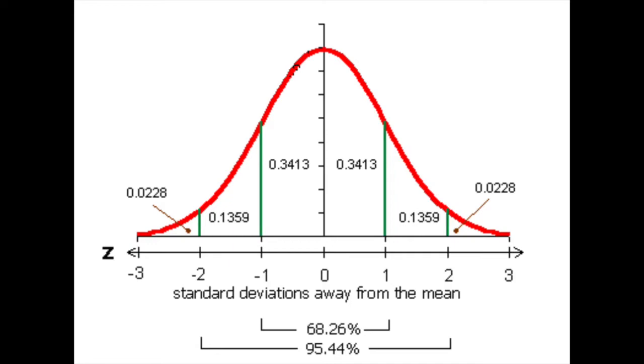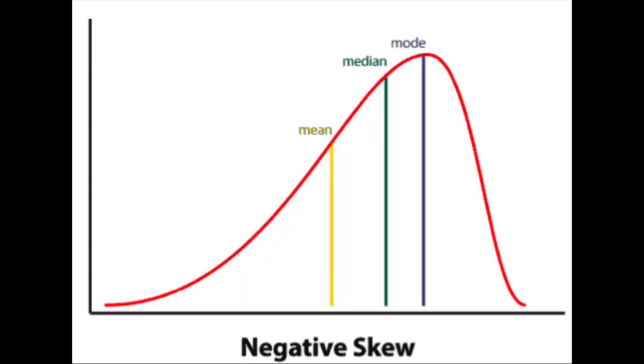We have the bell curve or the normal curve, and many of the tests in our field are based on that curve, but not all of them. In fact, articulation tests for the most part are based on a negatively skewed distribution.